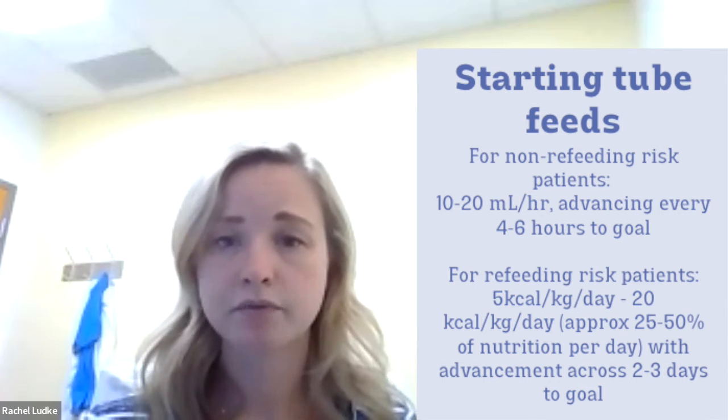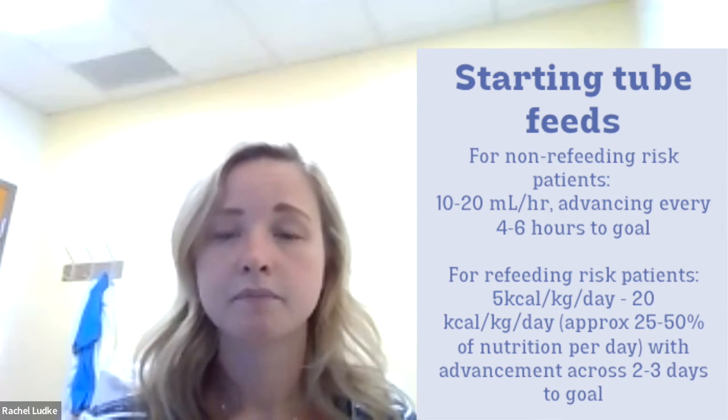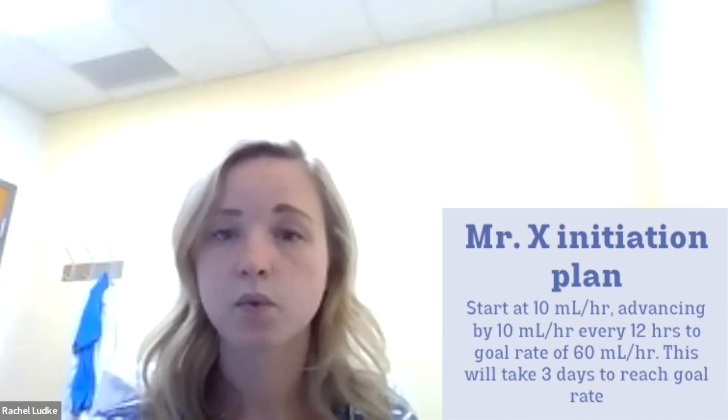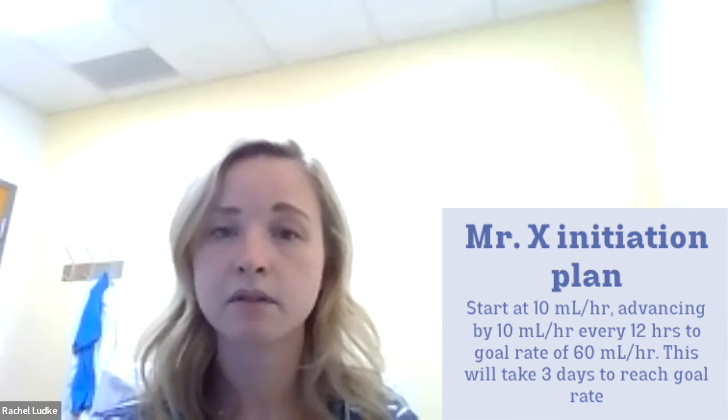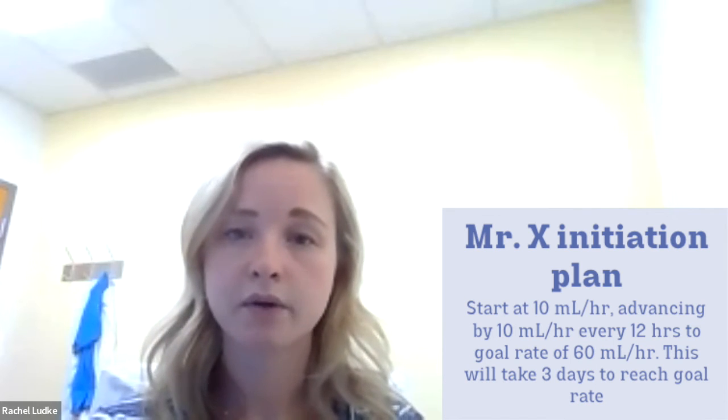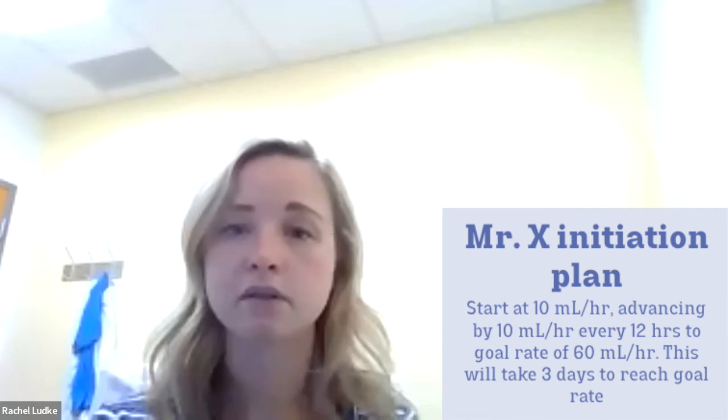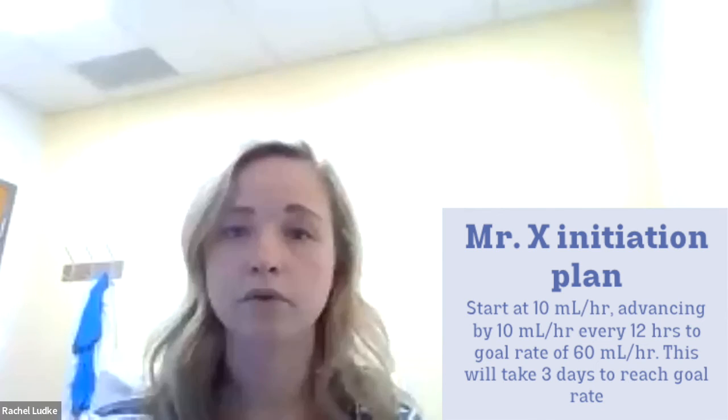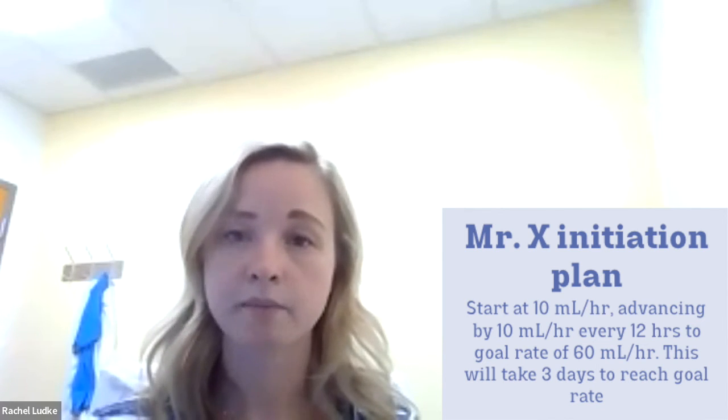We want to take about two to three days of slow advancement of tube feeding to get to the patient's goal rate. With Mr. X, we're going to start him at 10 milliliters an hour, and we're going to advance by 10 milliliters every 12 hours to our goal rate of 60 milliliters an hour. That should take us three days to get to his goal rate, which is within our recommendations.